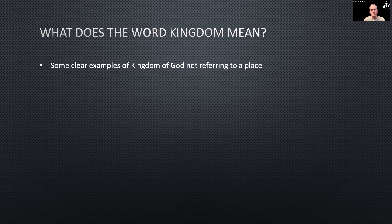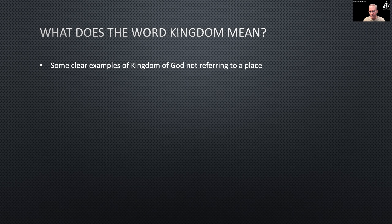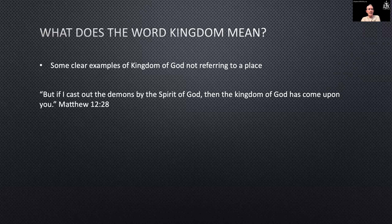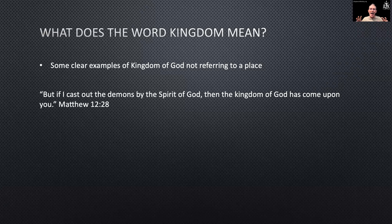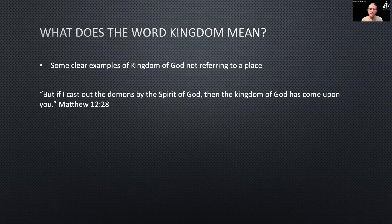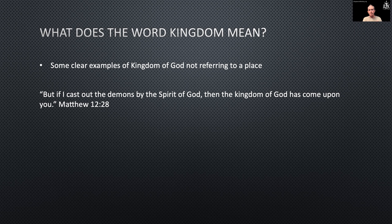Here are some clear examples of 'the kingdom of God' not referring to a place. The first is Matthew 12:28: 'But if I cast out the demons by the Spirit of God, then the kingdom of God has come upon you.' Clearly that is not talking about a place — it's talking about action, the rulership of the King. Jesus is the King; he's shown up and is casting out demons. The kingdom of God has come upon them — he's demonstrating his rulership and authority within the reign of God.